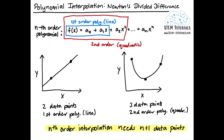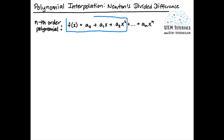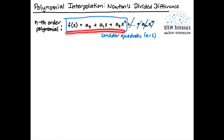Now let's discuss how you can determine the coefficients of your polynomial for polynomial interpolation. On this slide you can see the equation for our nth order polynomial. To help understand Newton's divided difference method we'll consider just a quadratic function — only the first three terms, ignoring the rest. There's another way of writing your quadratic function that will help us derive Newton's divided difference method.